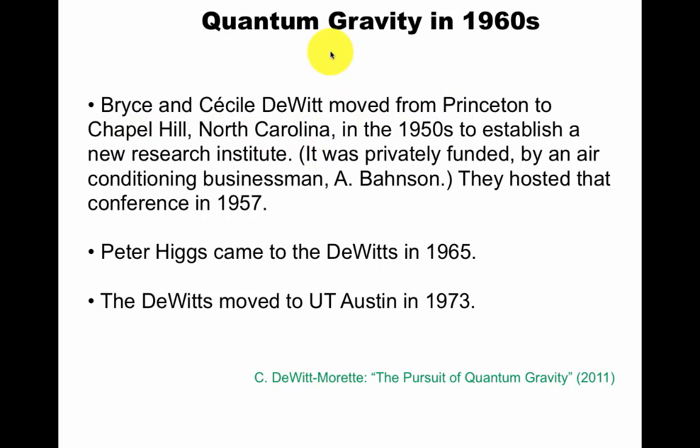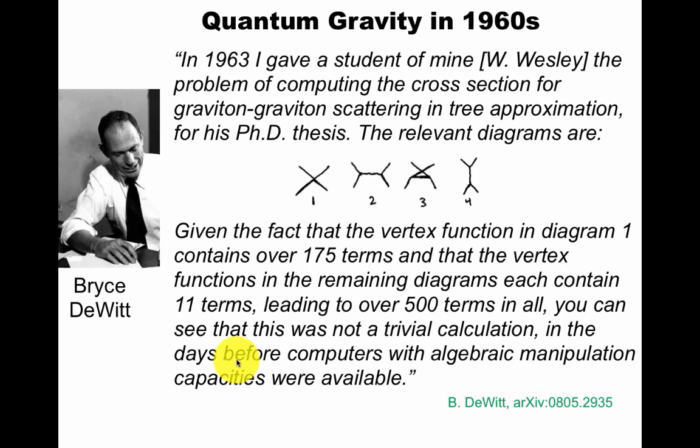And at this conference, Richard Feynman described what is called the sticky bead argument that has a Wikipedia page. This is a very interesting story in itself, and I will come back to this in other videos. Cecil and her husband, Bryce DeWitt, moved from Princeton to Chapel Hill, North Carolina in the 1950s to establish a new research institute, privately funded. They hosted that conference mentioned in the LIGO article. Incidentally, Peter Higgs came there in 65 and wrote one of his big Higgs papers there, and the DeWitts later moved to UT Austin.